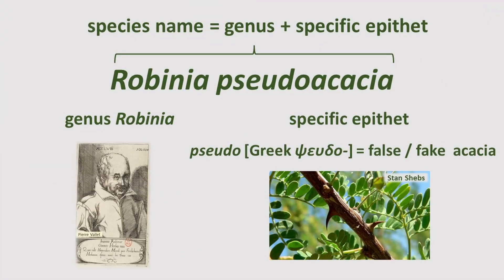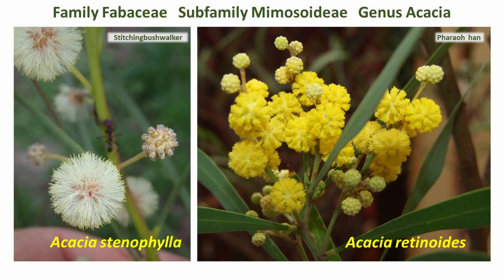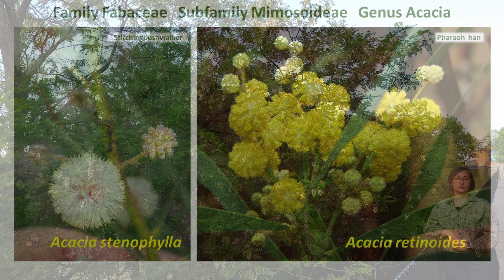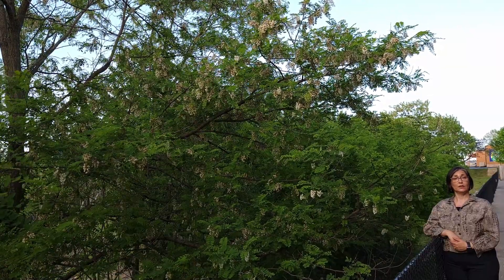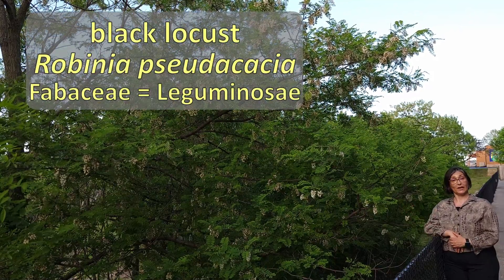The specific epithet pseudoacacia would translate into 'fake' or 'false acacia.' Even though in the same family Fabaceae, the plant genus Acacia has a totally different floral structure when compared to black locust and is in a different subfamily of the Fabaceae plant family. Acacia also prefers tropical and subtropical climates and would not thrive in the colder temperate climate as this particular species, black locust.